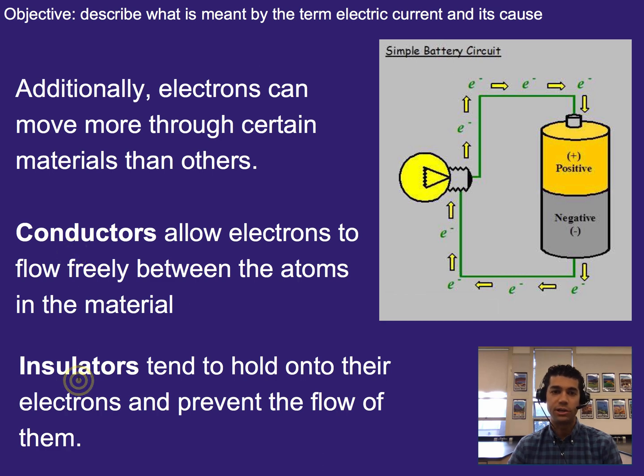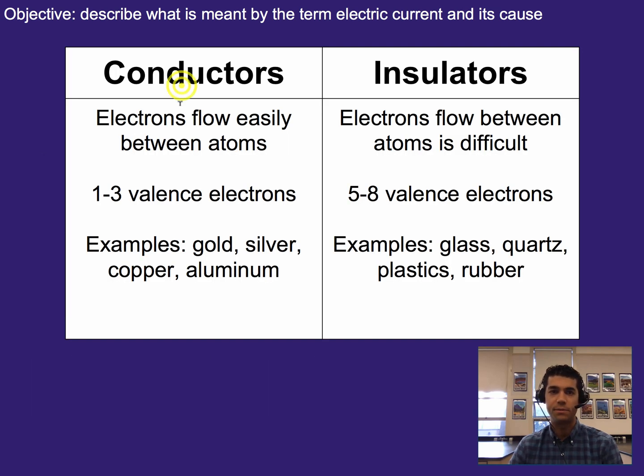So there are things that are really great conductors and really great insulators, and then there are things that are kind of in between for all of them. So to help recap on that, conductors allow electrons to flow easily between atoms. If you've taken chemistry, it's because they have one to three valence electrons. If you haven't taken chemistry, just know that there are some loose electrons that can flow around. Examples of this are common metals of gold, silver, copper, and aluminum.